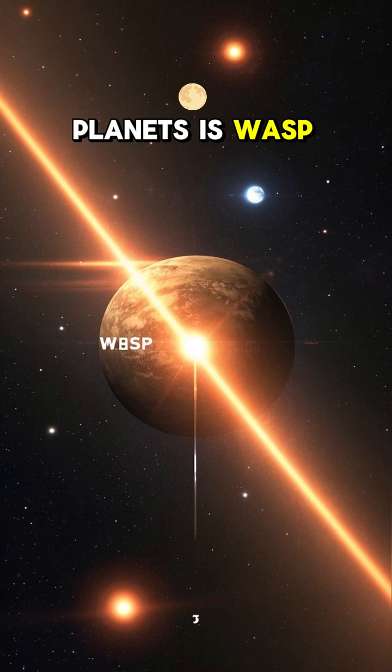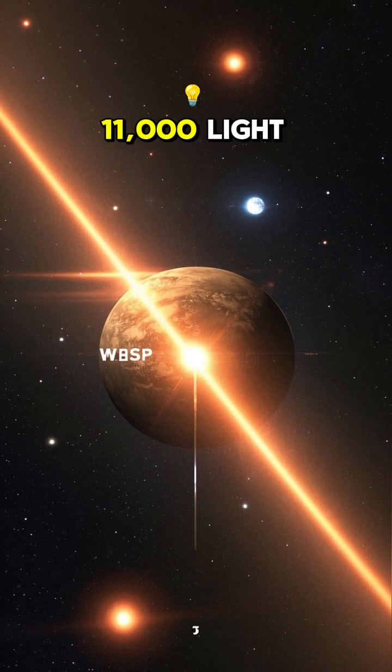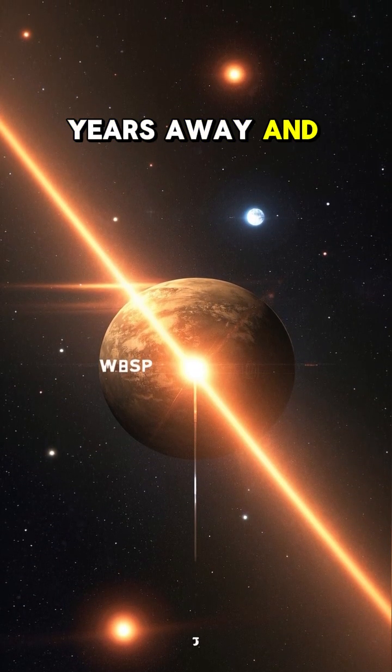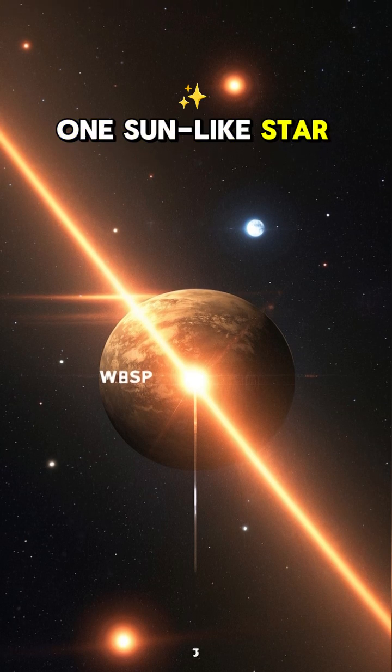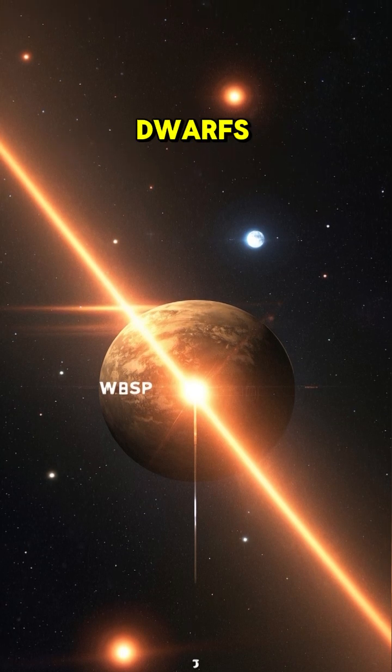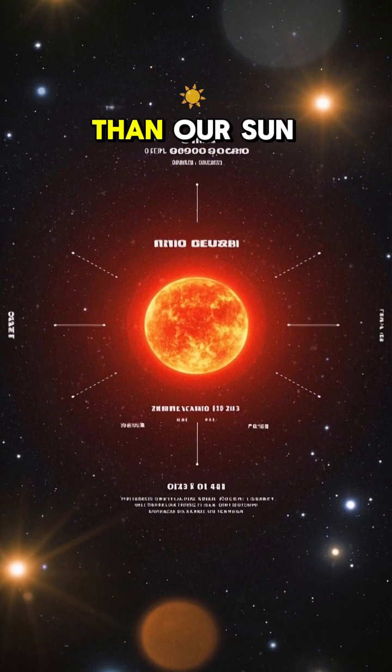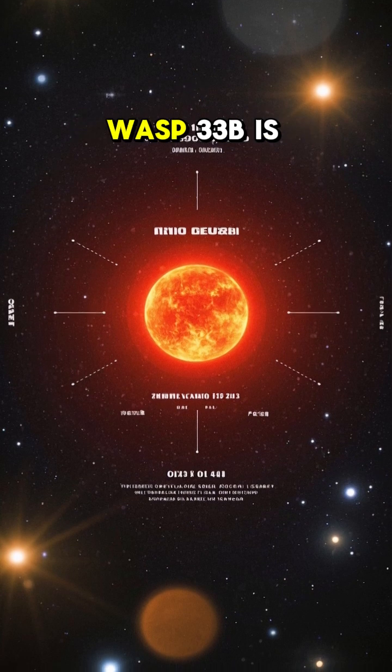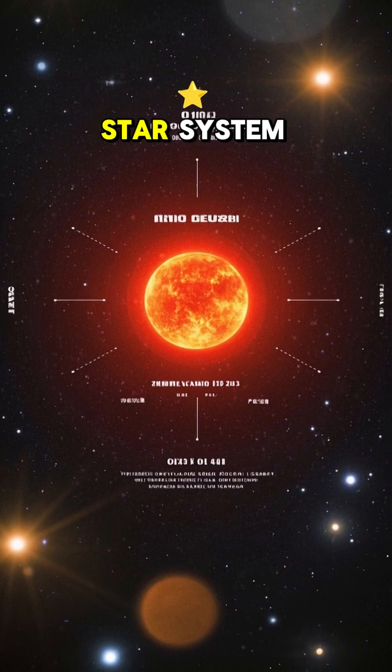One of these planets is WASP-33b. It's about 11,000 light years away and has at least one sun-like star and two red dwarfs. Red dwarfs are smaller and cooler than our sun. So even though WASP-33b is in a triple star system,